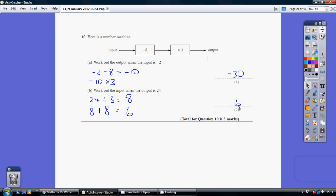Now that's easy to check. Take your 16 and pop it in your input and check you get 24 as your output. So popping our 16 in as our input, 16 take away 8 is 8, 8 times 3 is 24. Yep, so that works.